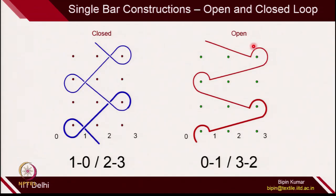Another important thing covered last week was closed loop and open loop. In closed and open loop construction, we have seen how the direction of overlap and underlap can be changed to get different types of fabric structure. In closed loop construction, the direction of overlap in the same course is 1 to 0, and the direction of underlap is from 0 to 2 — which are in opposite directions. In open loop construction, the direction of overlap is 0 to 1, and the underlap is also in the same direction, going from 1 to 3.